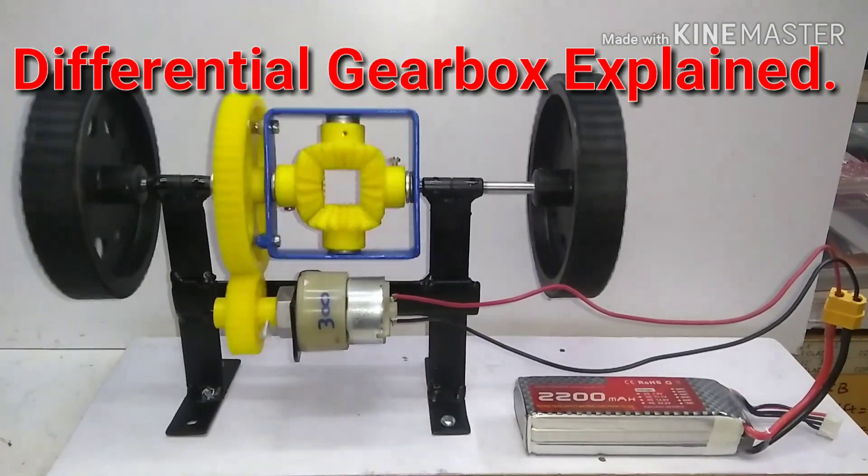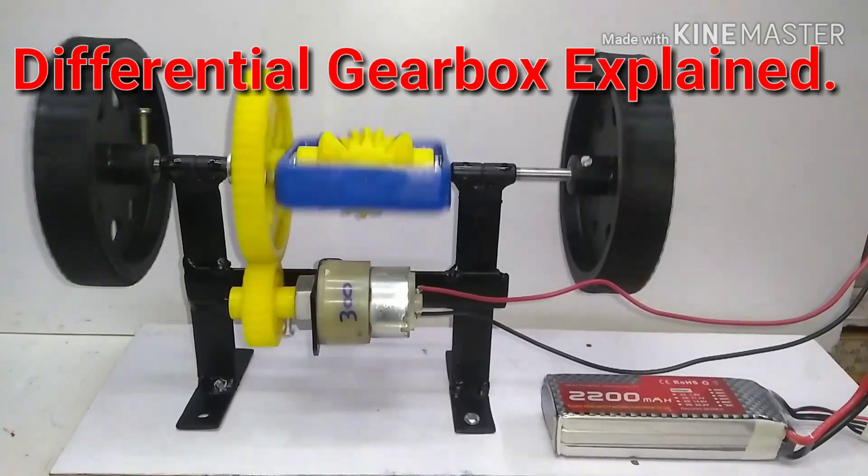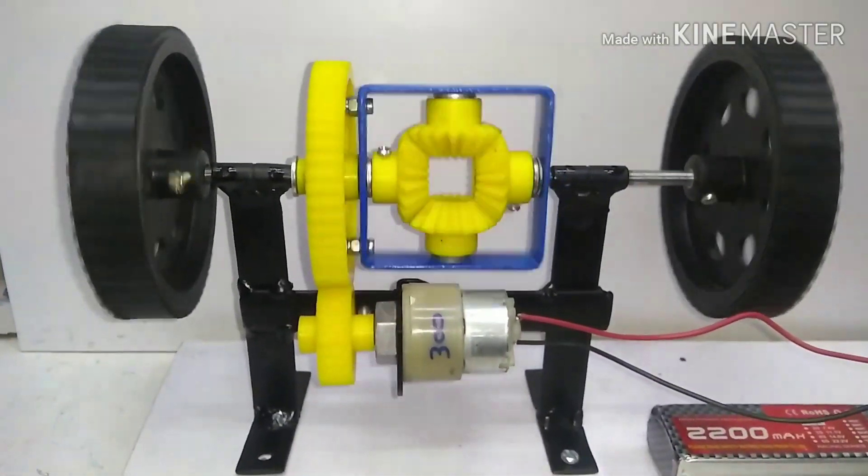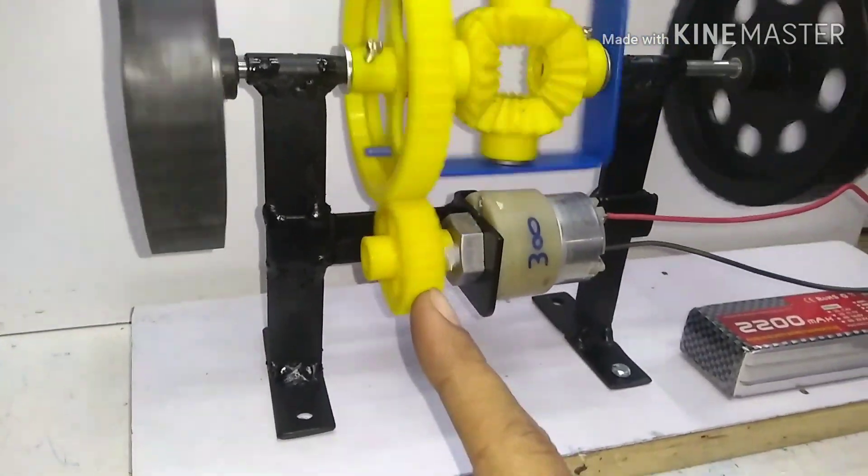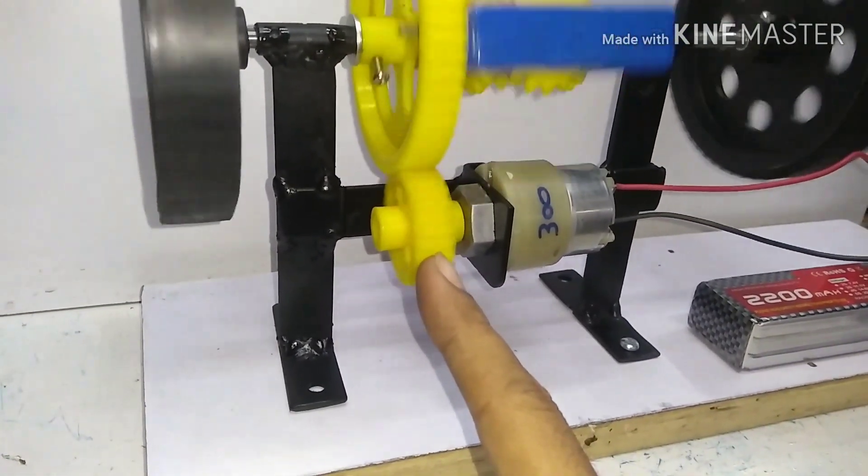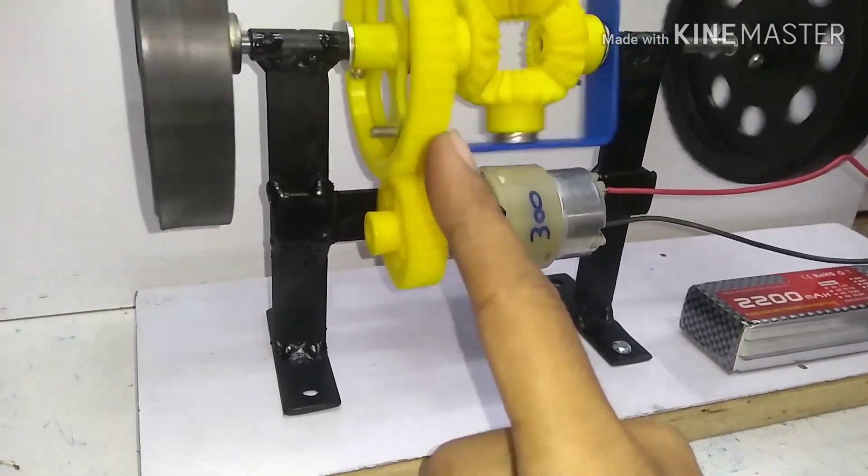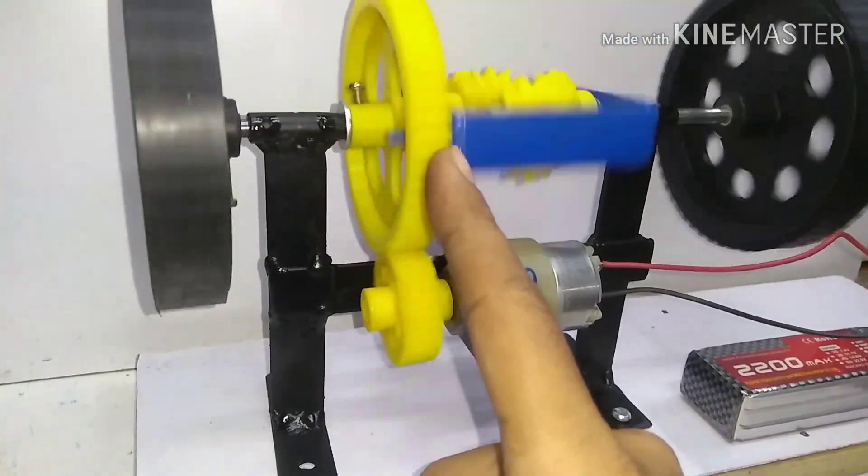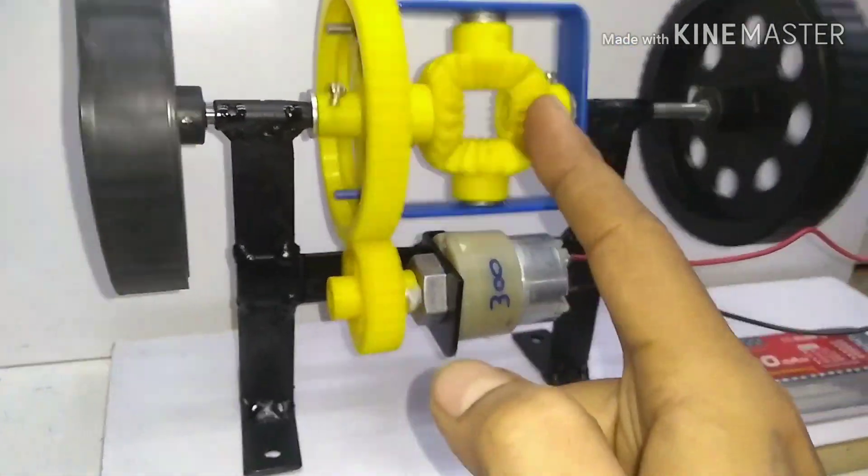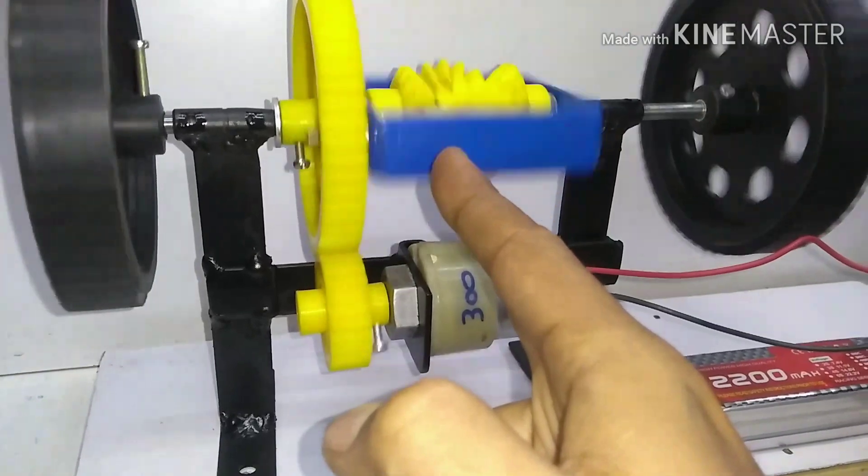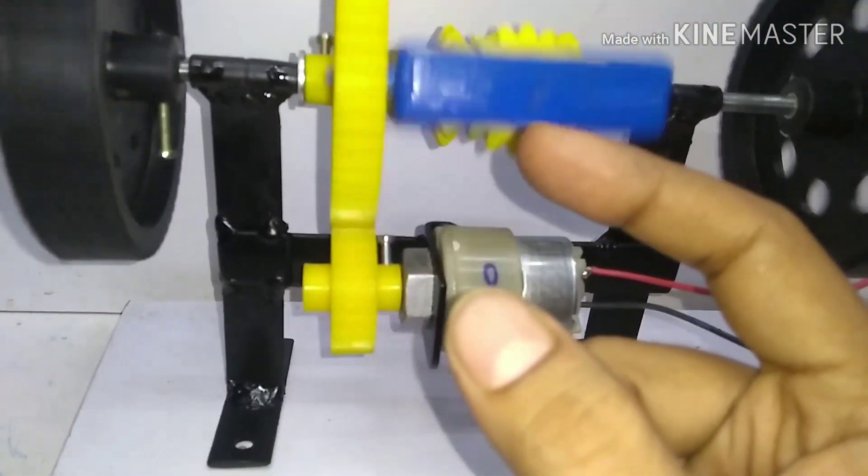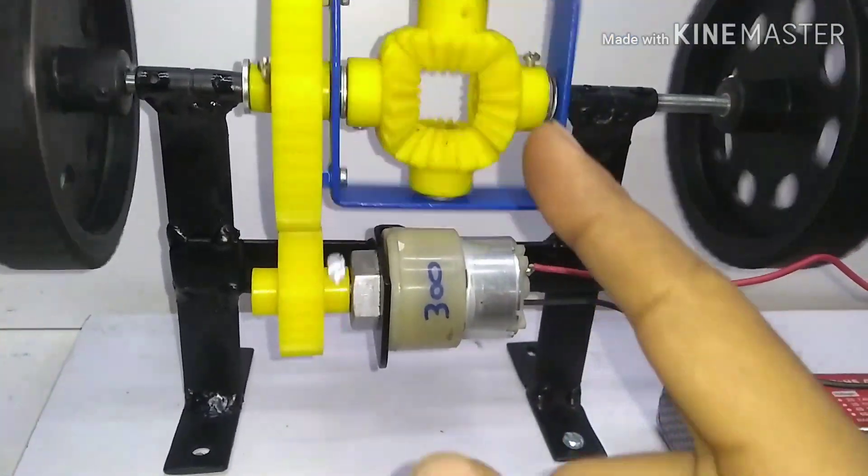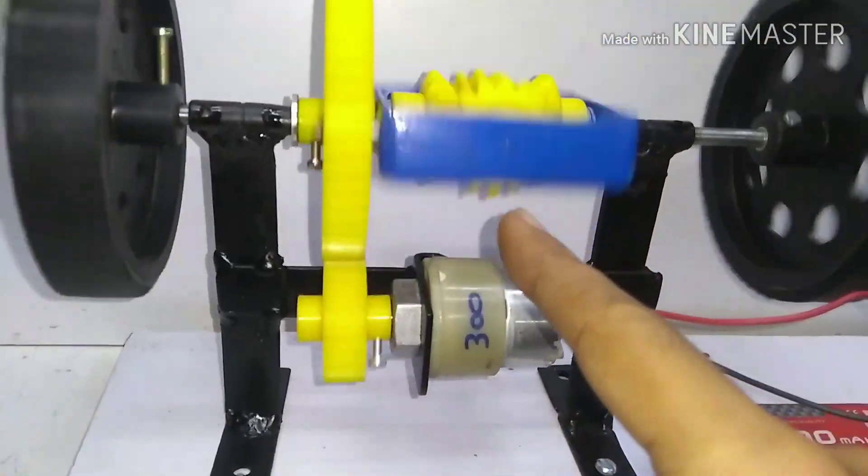Hello friends, today I made a differential gearbox out of plastic gears. This pinion gear has 25 teeth, and this spur gear has 56 teeth. These bevel gears—I haven't counted the teeth on them, but they have a diameter of about one inch, and four such gears...